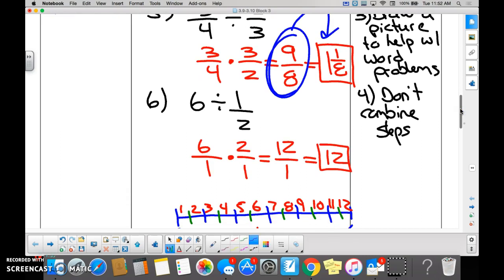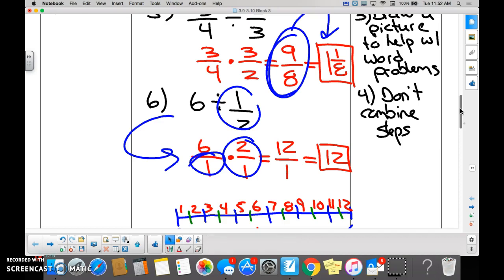I think Toby told us this one. When he realized it was a division problem, he wanted to rewrite it so that the one-half became the reciprocal, which is two over one. But notice what he did down here. What did he add? A one as a denominator, right? It just helps keep things straight or keep things organized in your head.